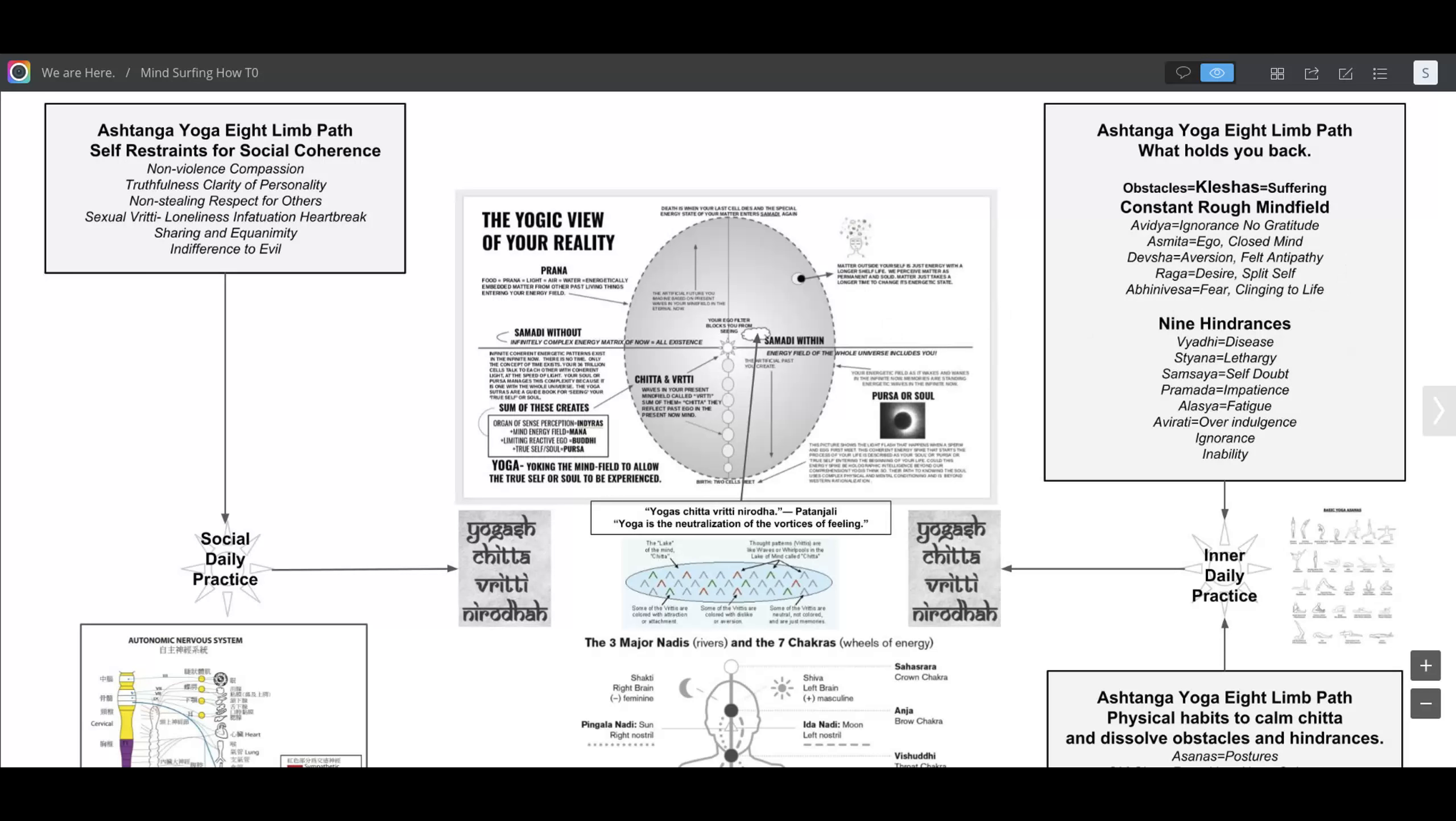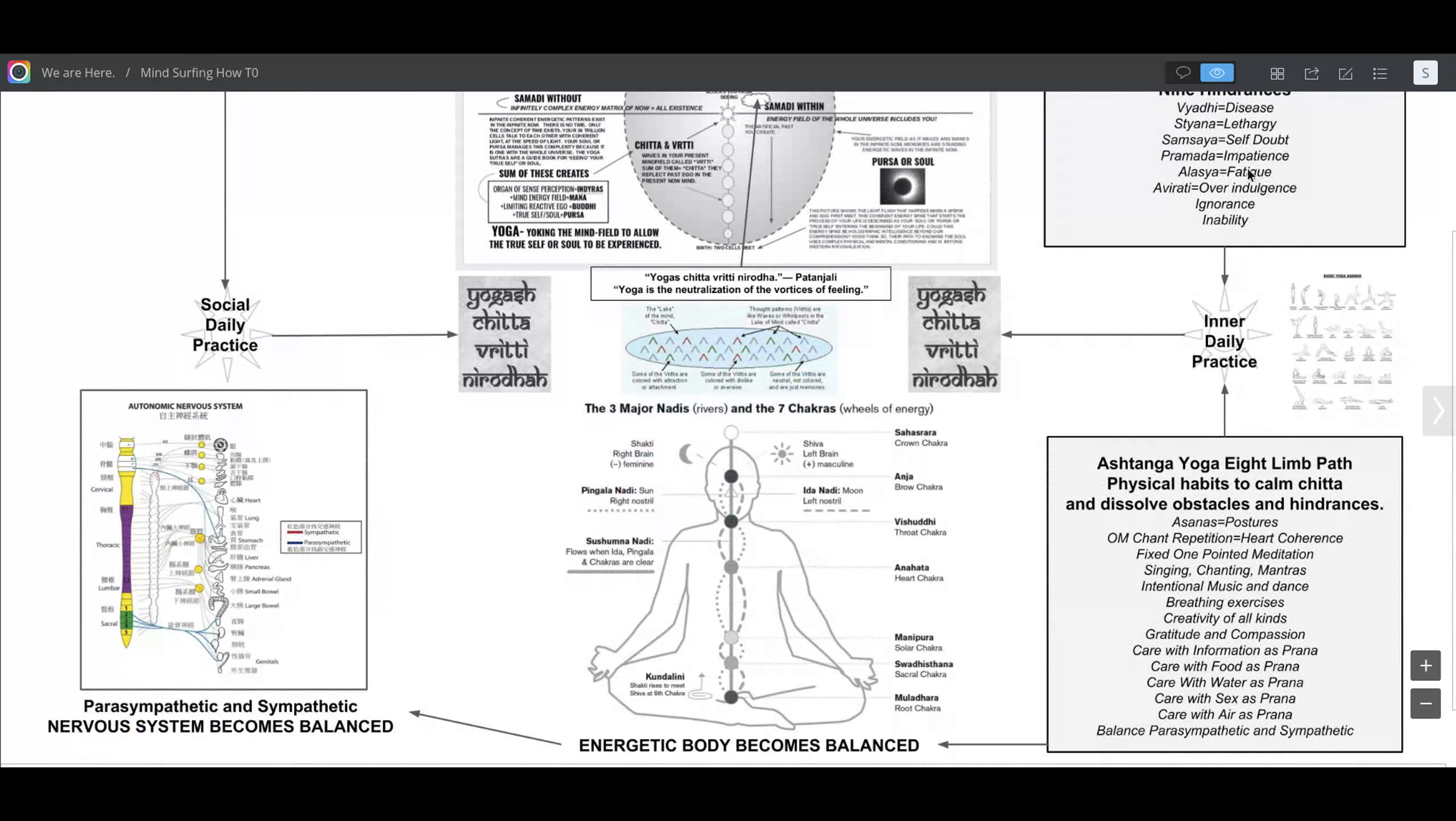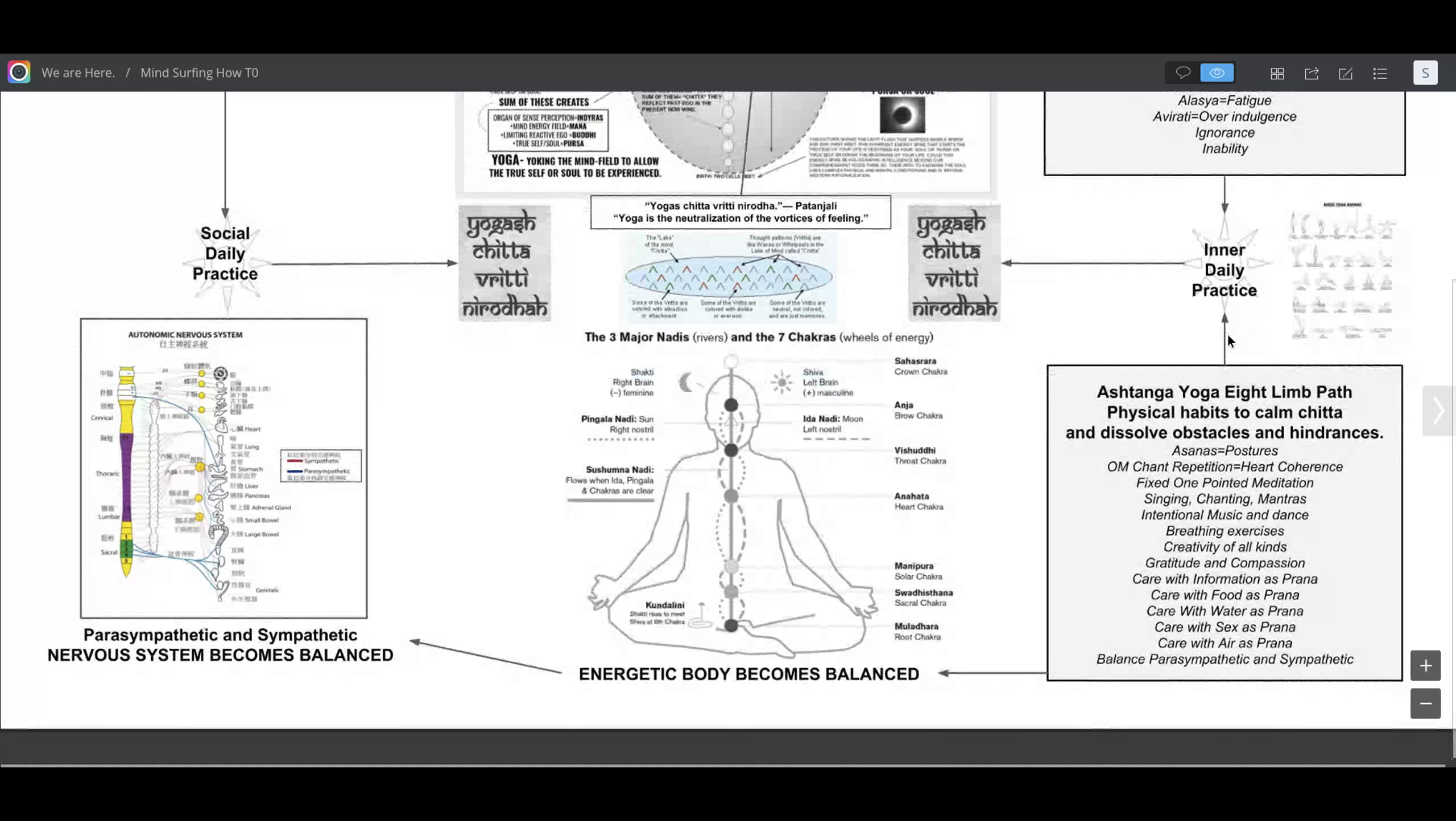How do we get to the calm lake? We get there by practicing the eight limb path of physical habits to calm the lake and dissolve obstacles and hindrances.